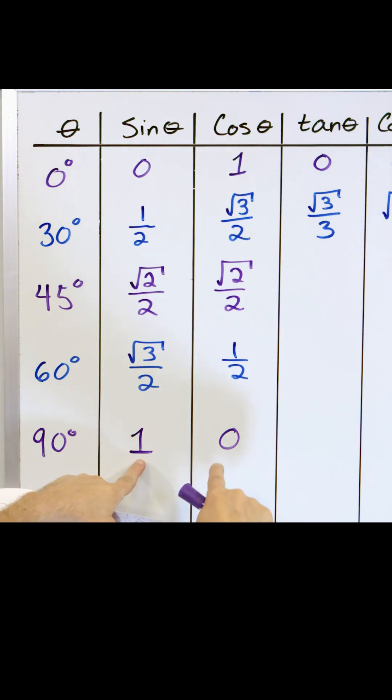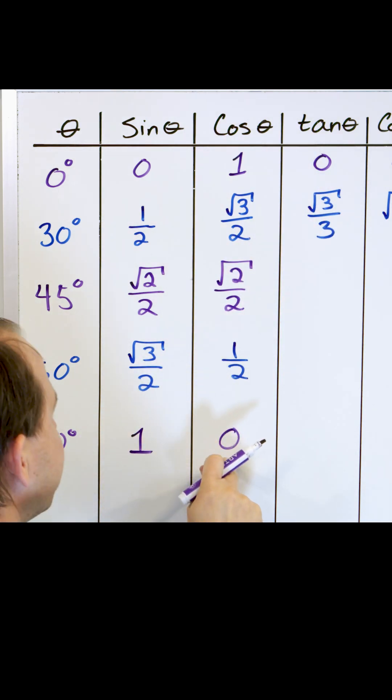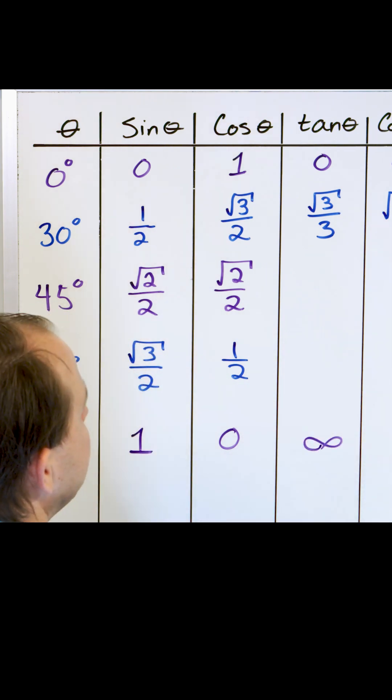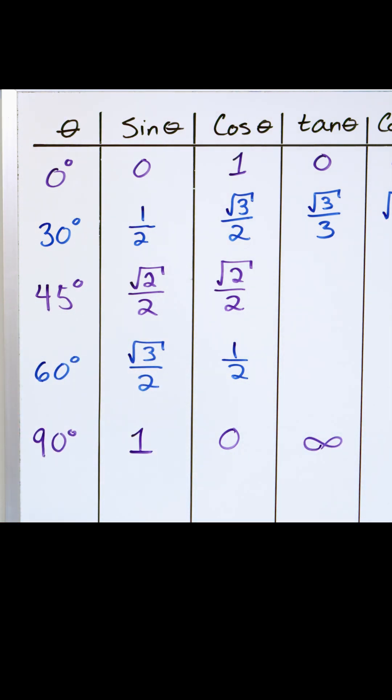The sine down here is a one and the cosine is zero. So the tangent of 90 degrees is sine divided by cosine, which is one divided by zero, which is infinity. So the tangent actually works out to be infinity for 90 degrees.